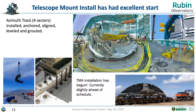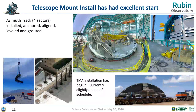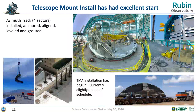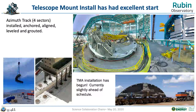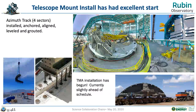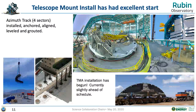The two gray pieces — one in the foreground and one in the background — are the supports for the elevation axis. The yellow structure in the middle is the surrogate mass for the M1M3 mirror cell system. You can see in the far upper right that surrogate mass being lifted and lowered into the dome.